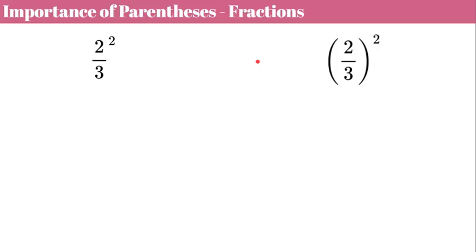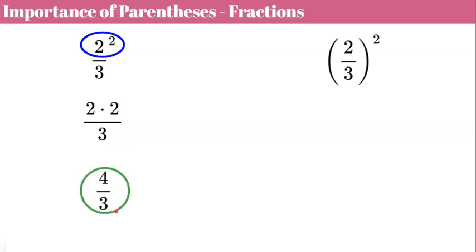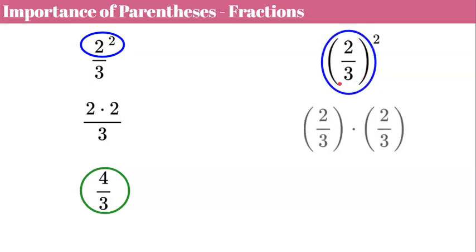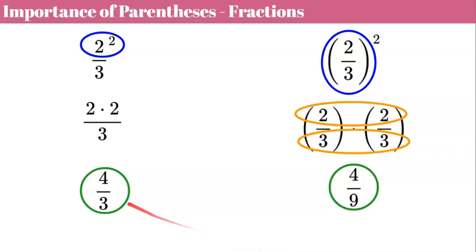Parentheses are also important with fractions. Without parentheses, the exponent two belongs only to the numerator two: that gives us two squared over three, which is four over three. With parentheses around two-thirds, the base is the entire fraction two-thirds, so it's two-thirds times two-thirds. Multiplying numerators gives four and denominators gives nine, so the result is four-ninths. Again, two very different values.